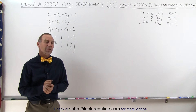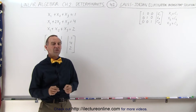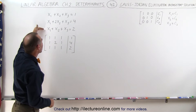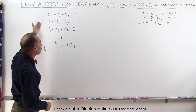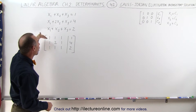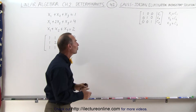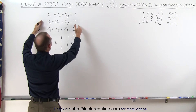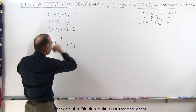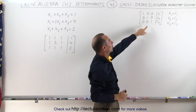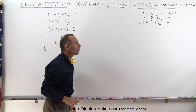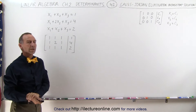Welcome to iLecture Online. Here's another special case that you might run into. We have three linear equations and we want to solve them simultaneously — finding values for x1, x2, and x3 that satisfy all three equations. We want to write the augmented matrix, then use the Gauss-Jordan elimination method to identify the three specific values for x1, x2, and x3.